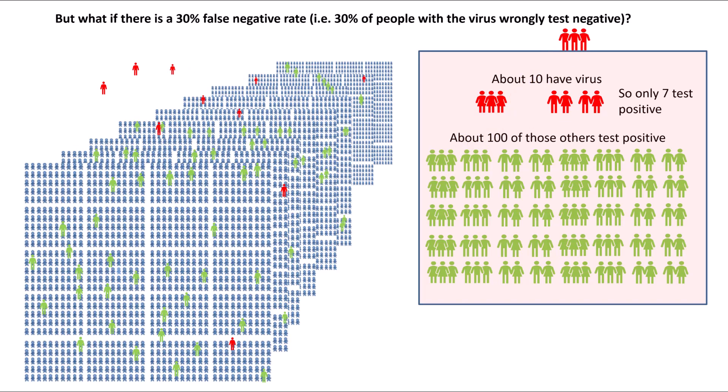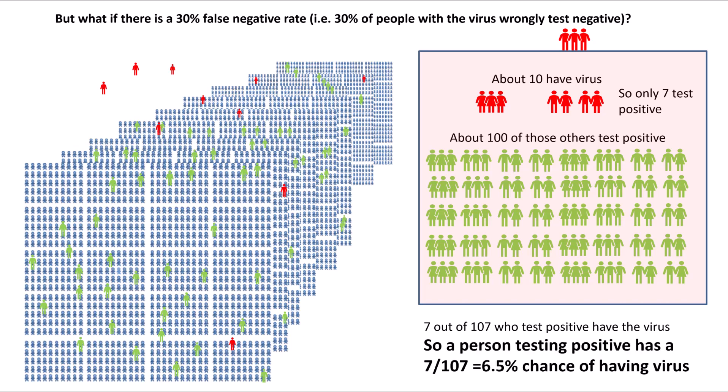So we now have seven out of 107 who test positive who really have the virus. That means there's just a 6.5% chance that a person testing positive has the virus, or equivalently the probability of a person testing positive being a false positive is now 93.5%. Taking into account the false negative rate means there's an even greater probability a person testing positive is a false positive — we miss a few true positives, but a far greater number who test positive are false positives.